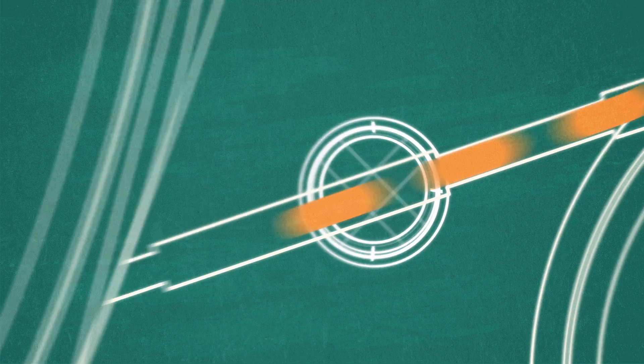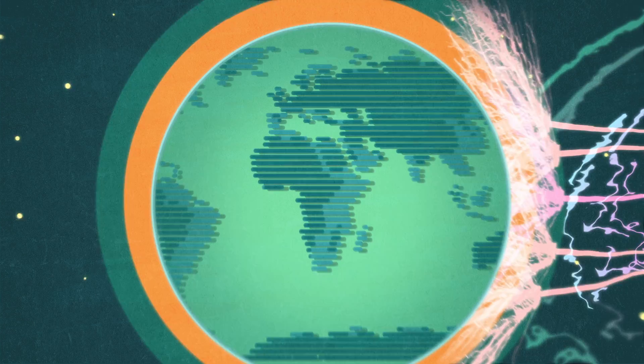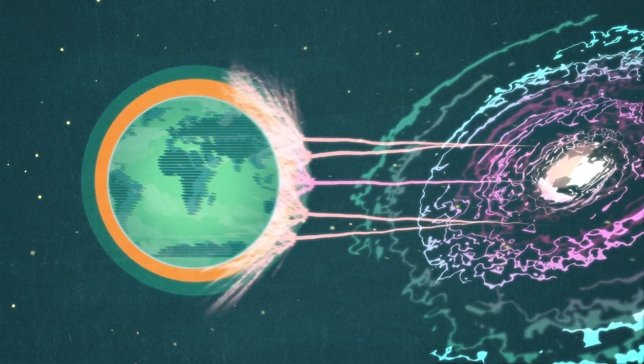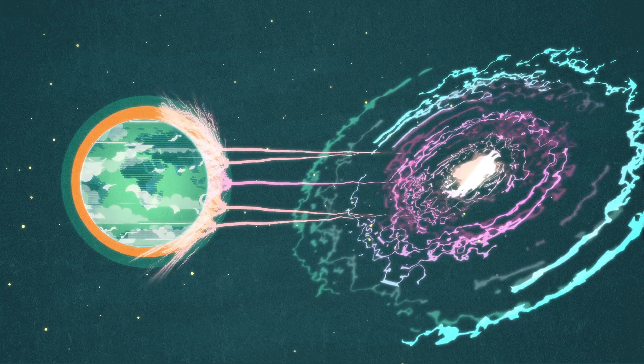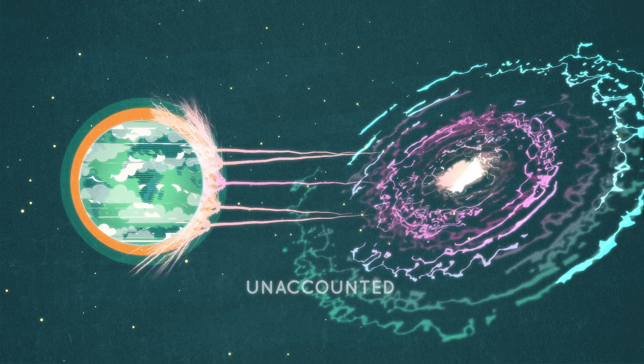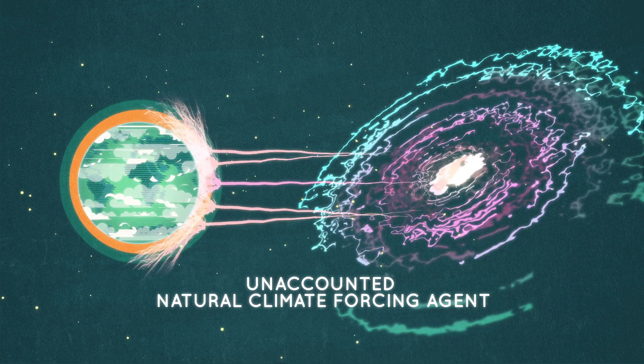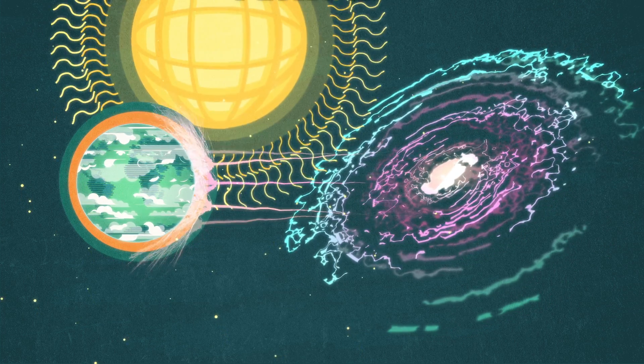Using an ionizing particle beam from the CERN proton synchrotron, CLOUD is also investigating if galactic cosmic rays enhance the formation of aerosols and clouds. This has been suggested as a possible unaccounted natural climate forcing agent, since the flux of cosmic rays raining down on the atmosphere varies with solar activity.